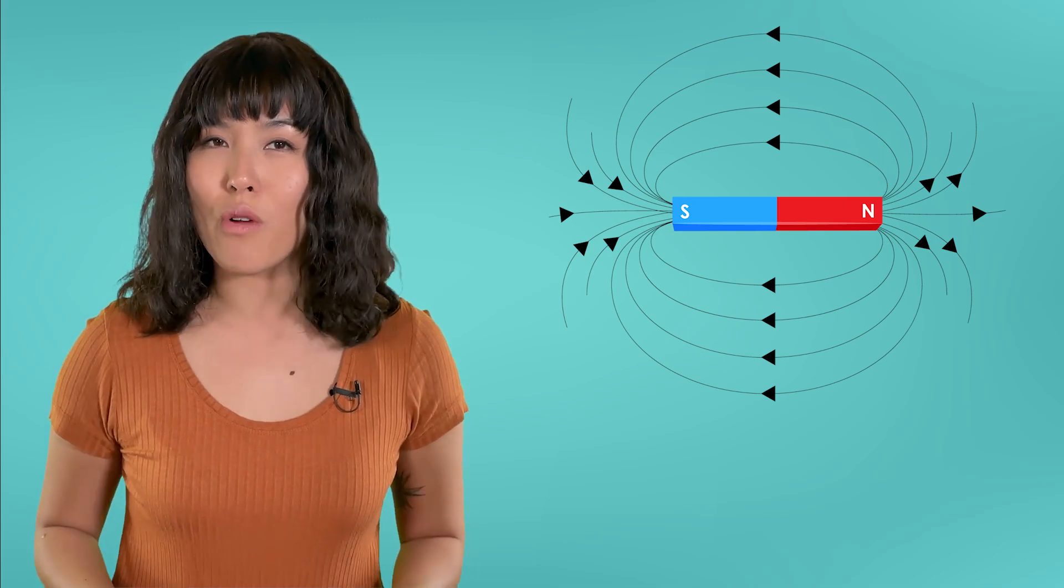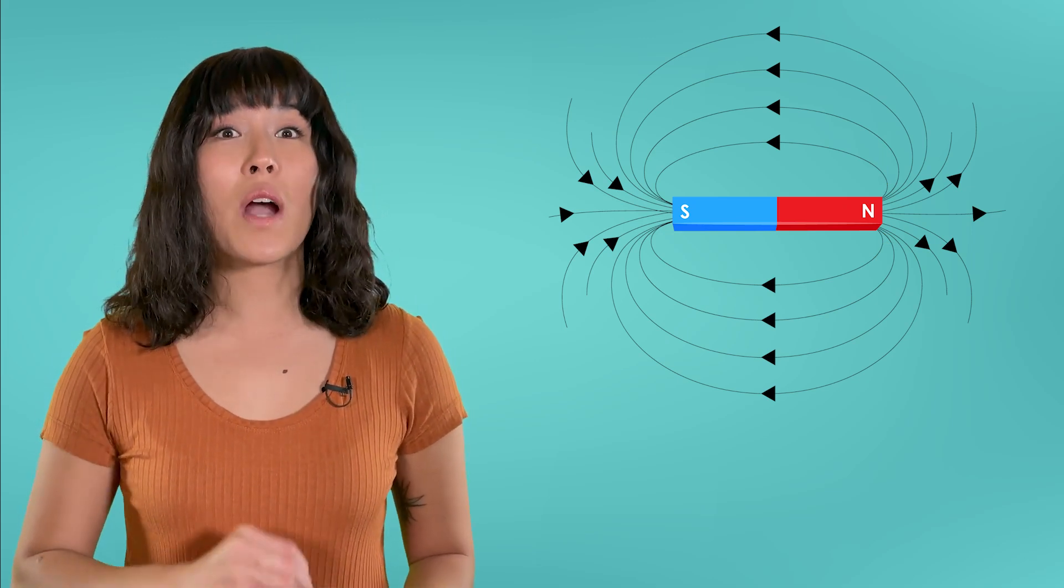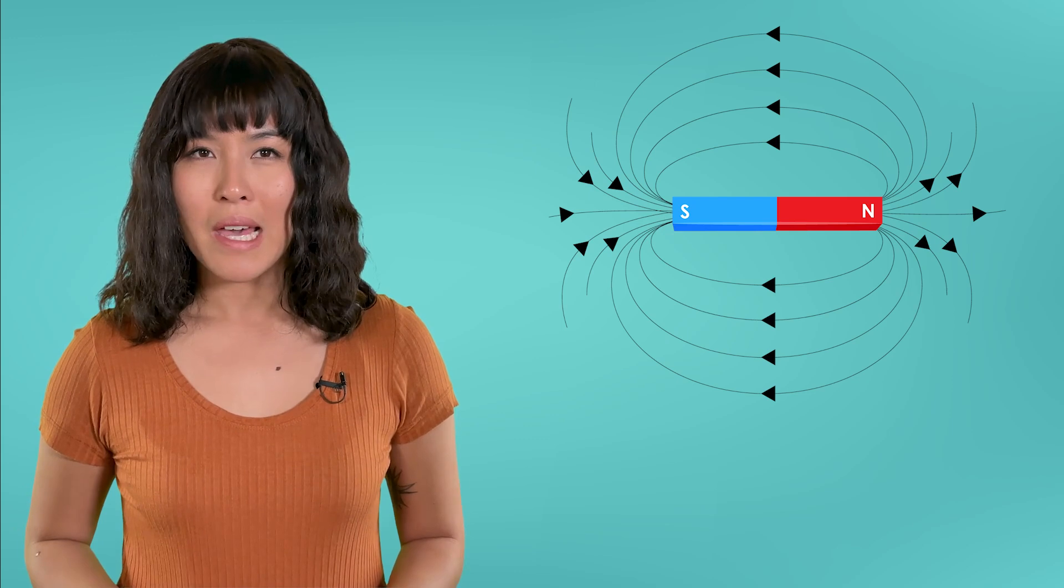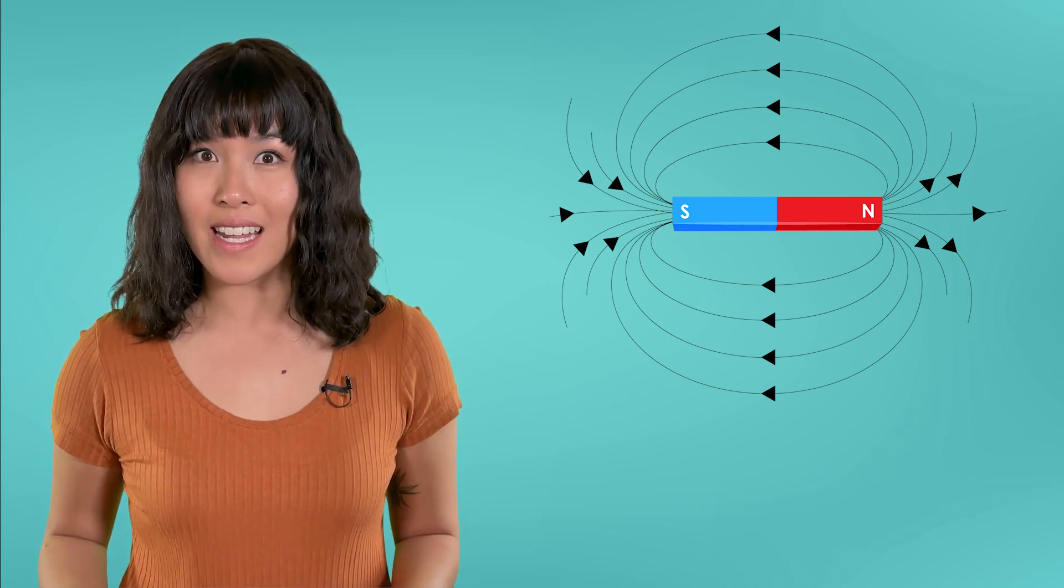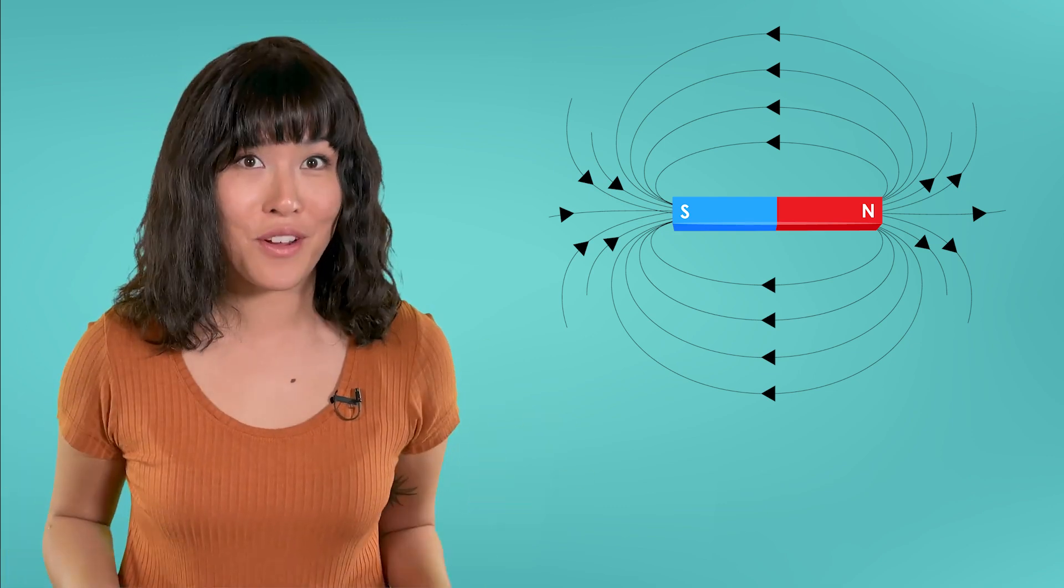We generally only draw the magnetic field lines around the outside, however, because they are more important in understanding how the magnet interacts with objects nearby.